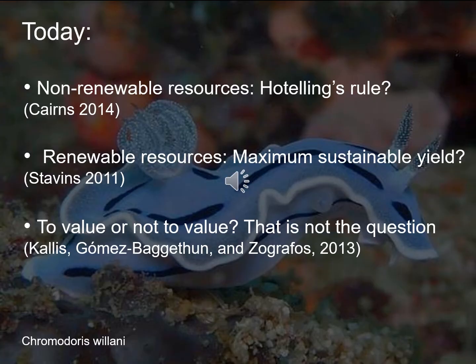We will do so with the help of three papers. I will make heavy use of quotes from Cairns to explain Hotelling's rule and the green paradox. Afterwards we will dive into the economics of renewable resources and examine concepts such as the tragedy of the commons and maximum sustainable yield, resorting to a review by Stavins.